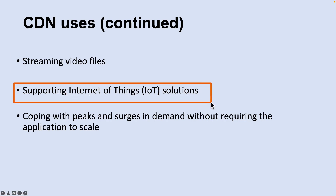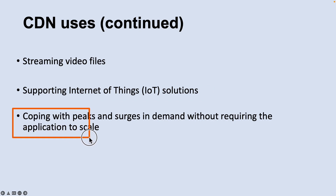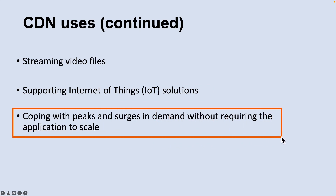Another use case is supporting Internet of Things solutions. The huge number of devices and appliances in an IoT solution can easily overwhelm an application if it has to distribute firmware updates directly to each device, while coping with peaks and surges in demand without requiring the application to scale, avoiding the consequent increased running cost.